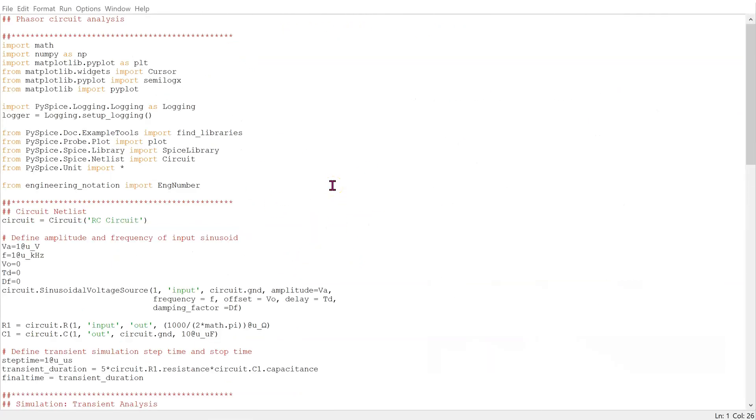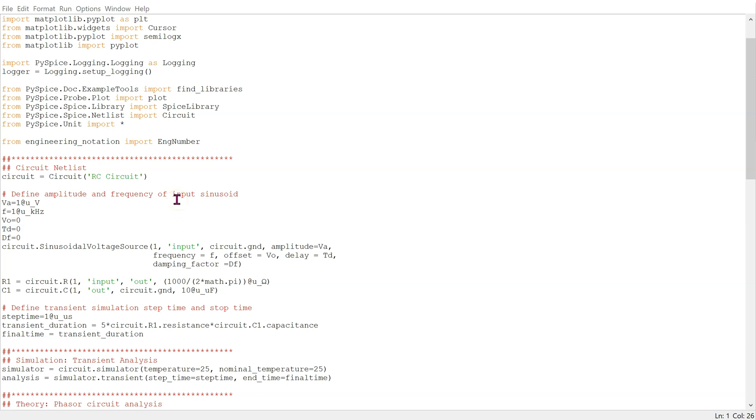This is the code to simulate the RC circuit and carry out phasor calculations for comparison. The code is available in the video description as well as the comments section. We have standard declarations at the top. The circuit netlist and the transient simulation, which was discussed previously, is here.